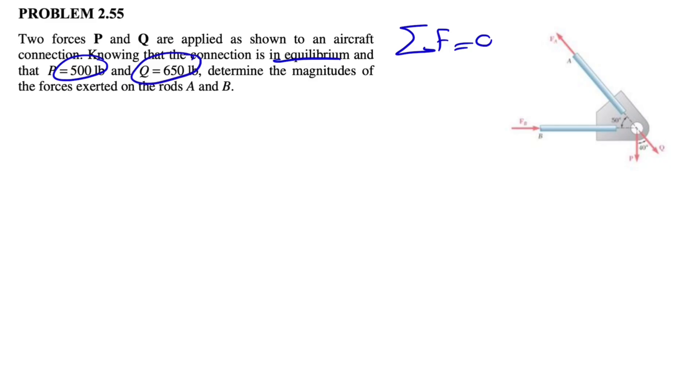We have two unknowns in here, FA and FB, which are the forces exerted on the rods A and B. So we're looking for the magnitude of these two forces. We have sum of all forces equals zero, but since we have two unknowns in here, we need at least two equations in order to find this.